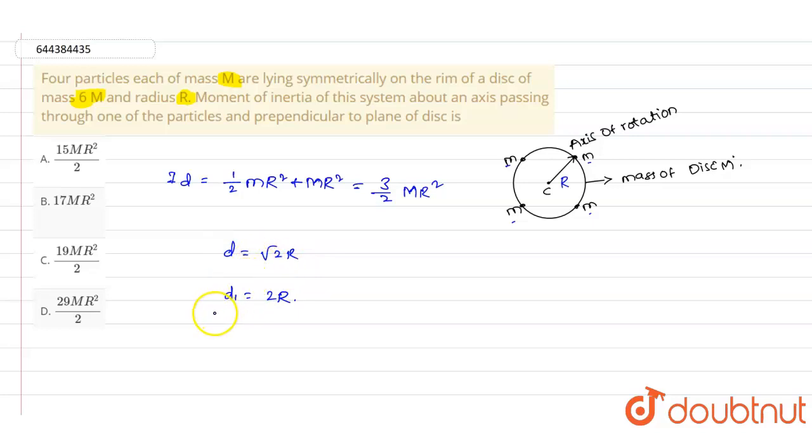So the moment of inertia of the particles about the axis of rotation can be written as I_p = 2m(√2R)² + m(2R)².